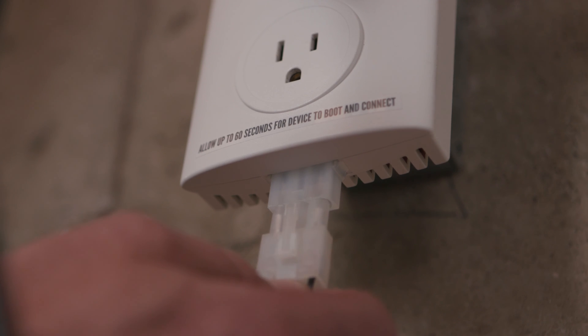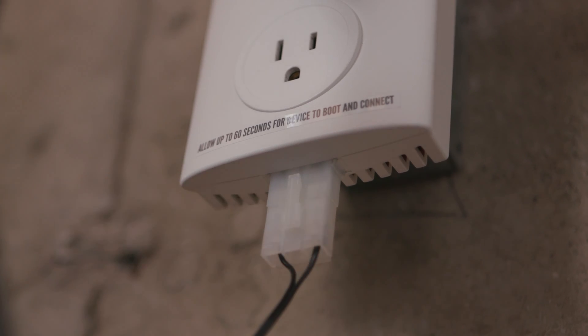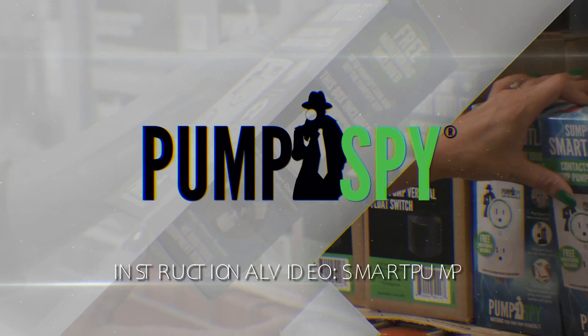Lastly, connect the high water sensor to the bottom of your smart outlet. The smart pump is now set up and keeping your basement dry.